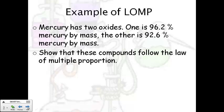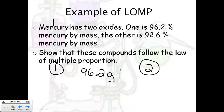Here's an example. Mercury has two oxides. One is 96.2% mercury by mass, the other is 92.6% mercury by mass. Show that these compounds follow the law of multiple proportions. So we have two different mercury oxides. I'm going to label them one and two for right now. And we know that this one, the first one, is 96.2. And the first step, remember, was change the percentage to grams. So that's how many grams of mercury we have.